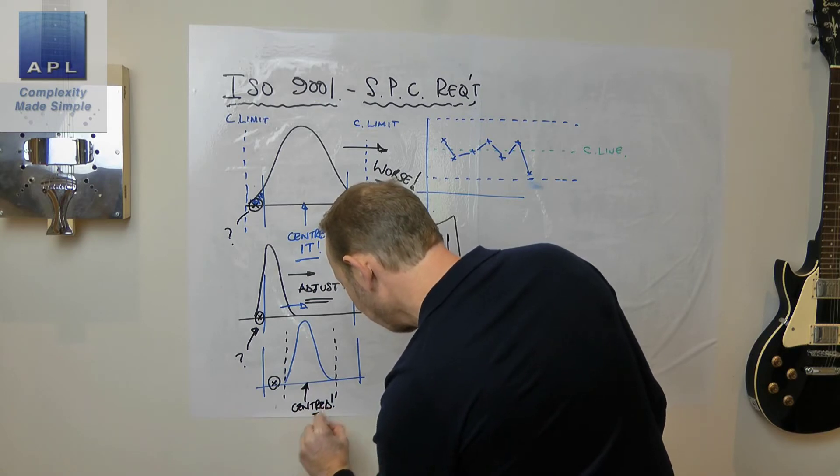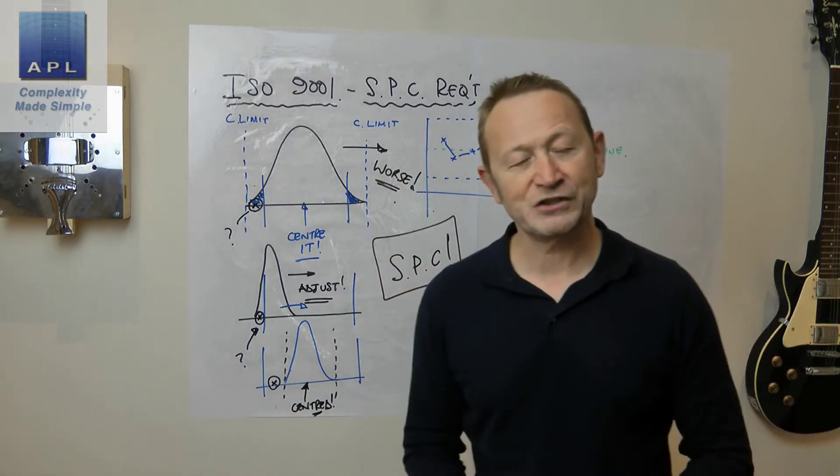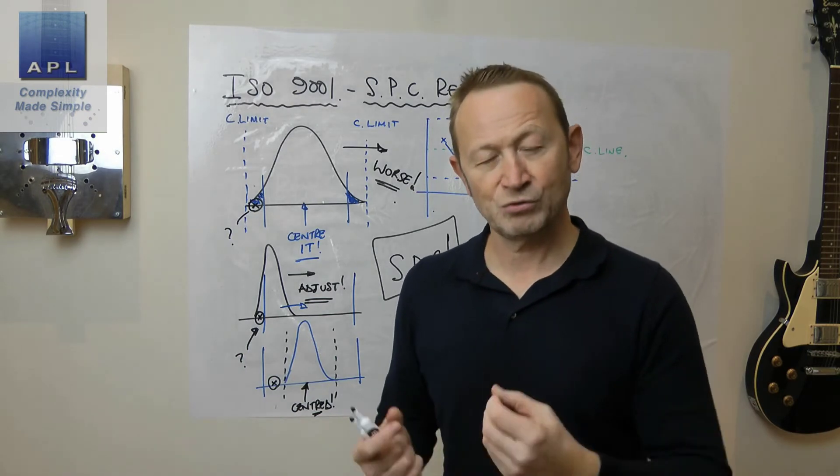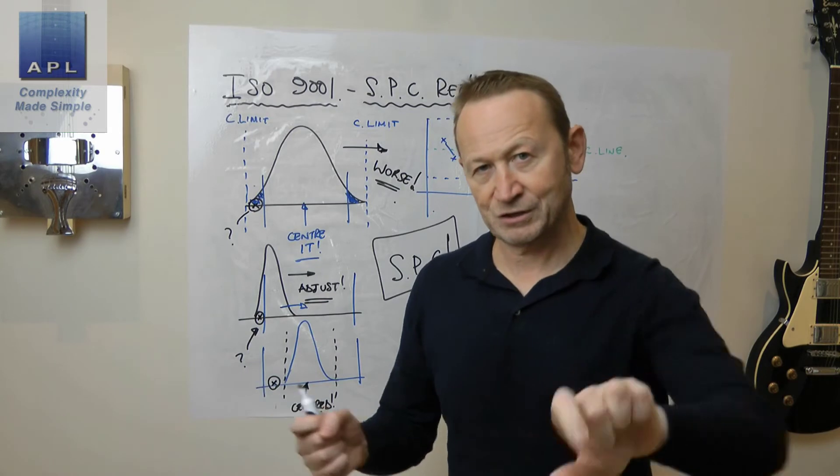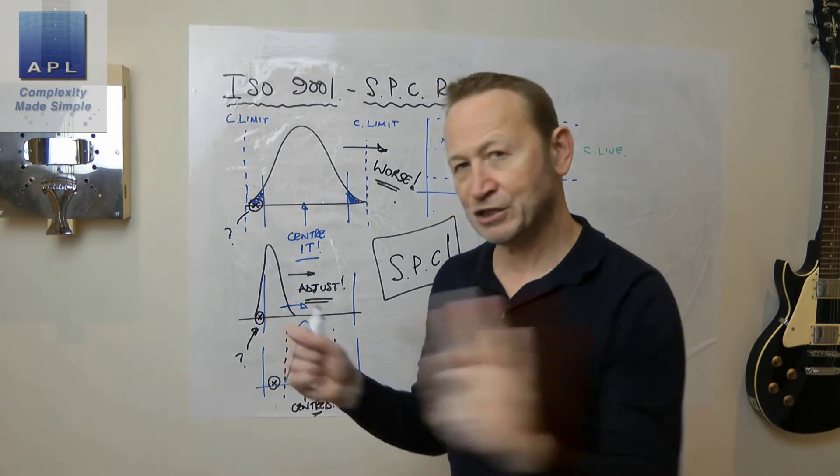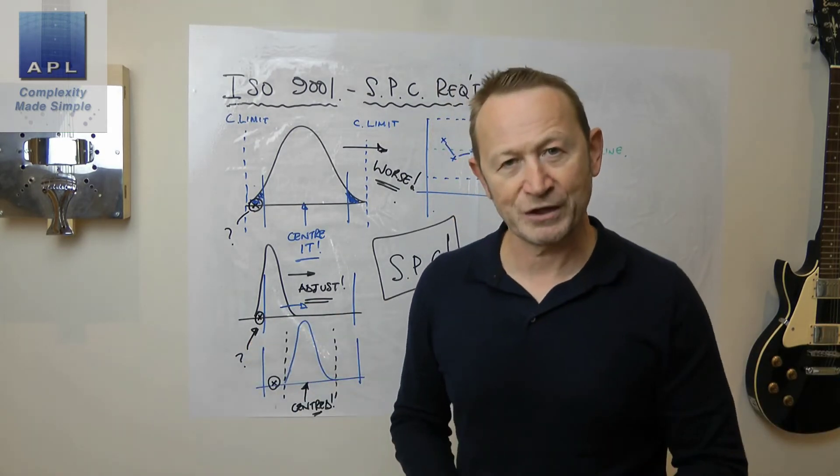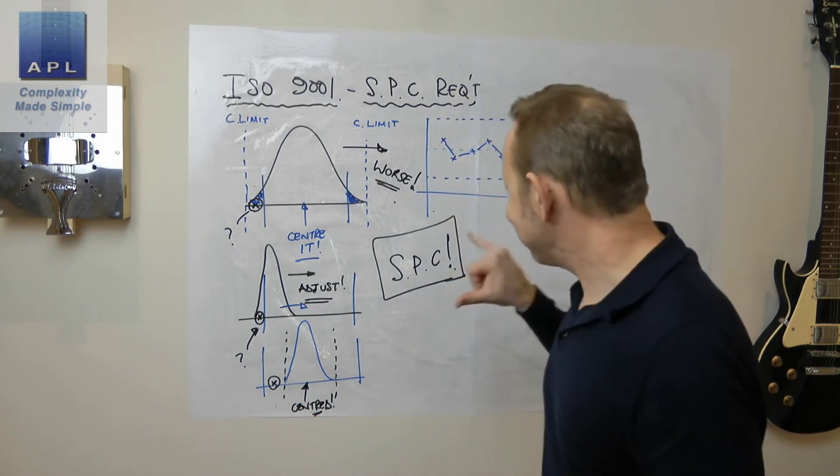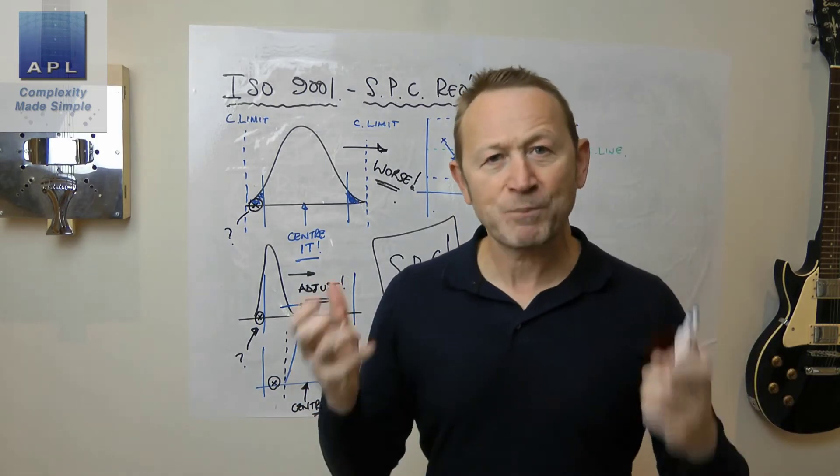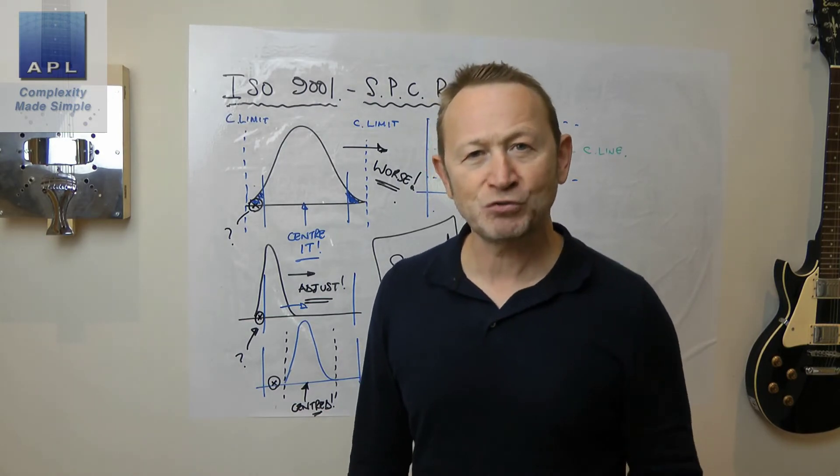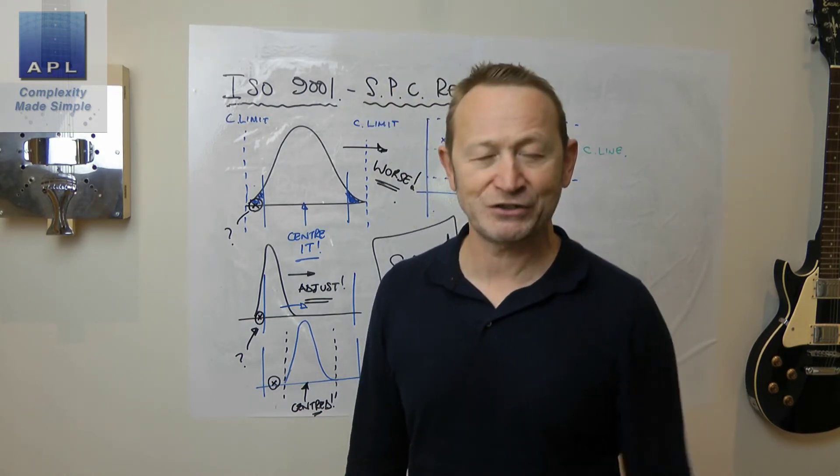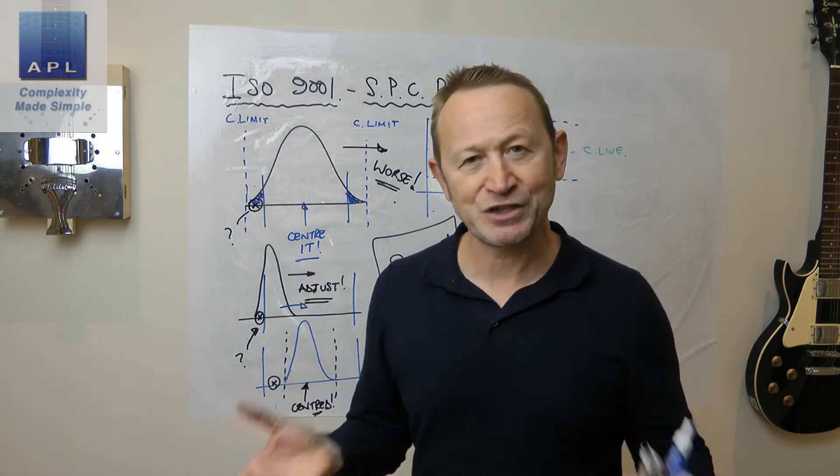You want your process to be perfectly set, don't you? Perfectly set means centered. That's what perfectly set means. You want your process to be perfectly set. You need to give him the tools to help him to do that. You need to give him the tools that give him the signal to adjust when it's appropriate, to not adjust when it's appropriate. SPC is always appropriate, you ISO idiots. Why would you write that in best practice documentation? I don't understand.